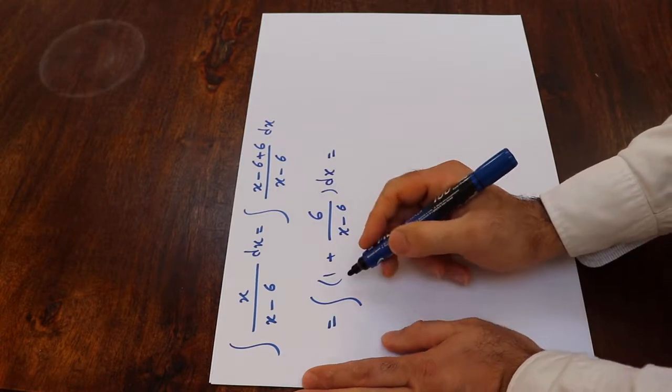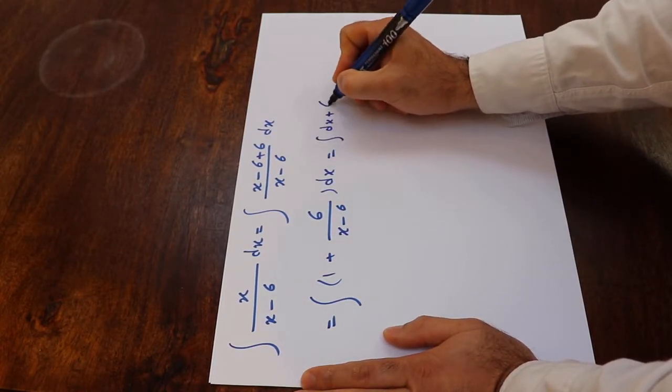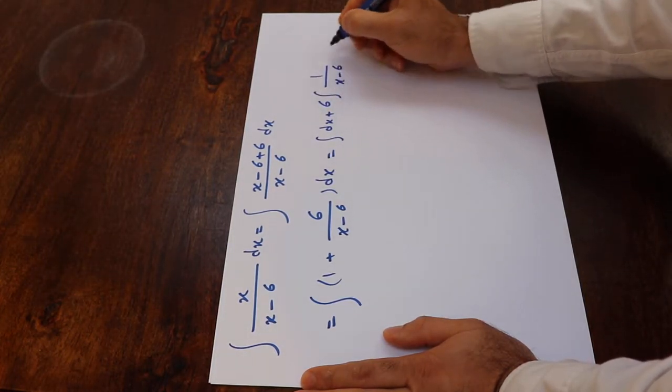This integral will be equal to the integral of dx plus 6 times the integral of 1 divided by x minus 6 dx.